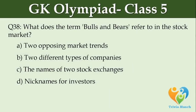What do the terms bulls and bears refer to in the stock market? Option A: Two opposite market trends. Option B: Two different types of companies. Option C: The names of two stock exchanges. Option D: Nicknames for investors.